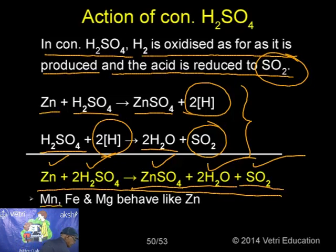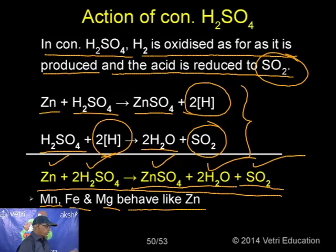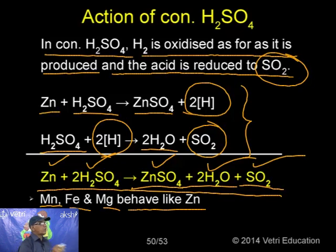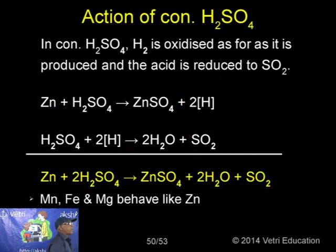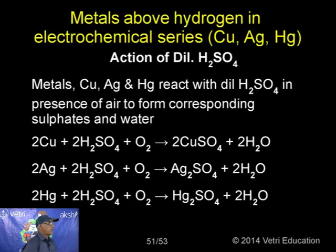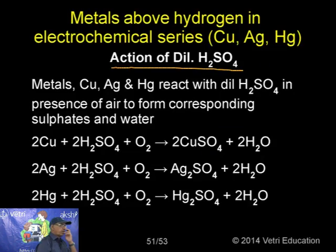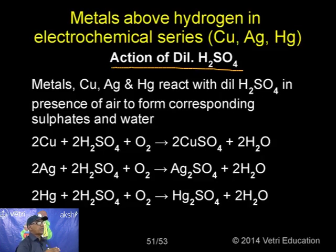With concentrated sulphuric acid, copper and similar metals first get oxidized to their oxide, which then reacts with excess acid. For example: Cu + 2H₂SO₄(conc.) → CuSO₄ + 2H₂O + SO₂. Similarly, silver and mercury react with concentrated sulphuric acid to give their sulphates, water, and SO₂.